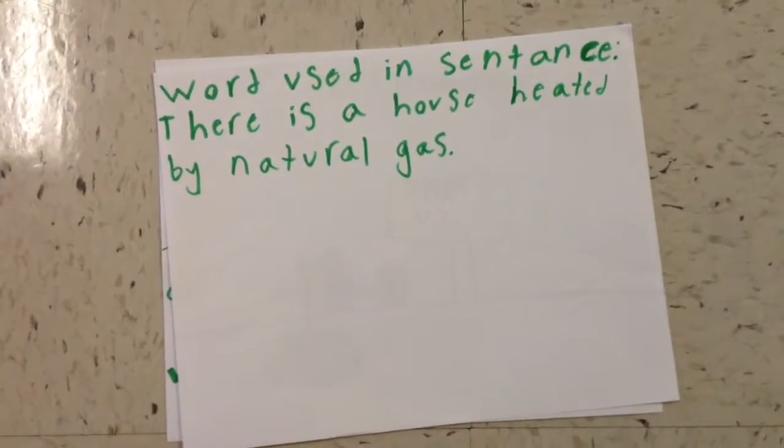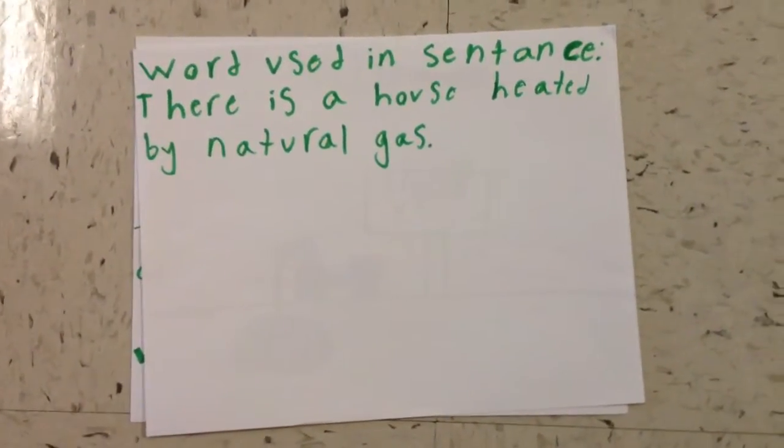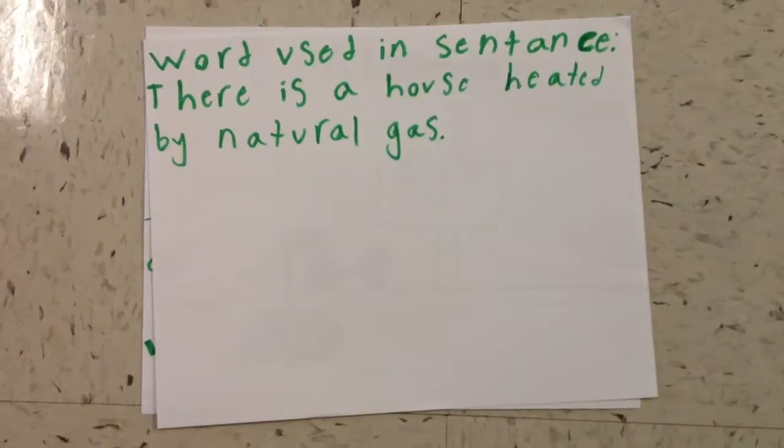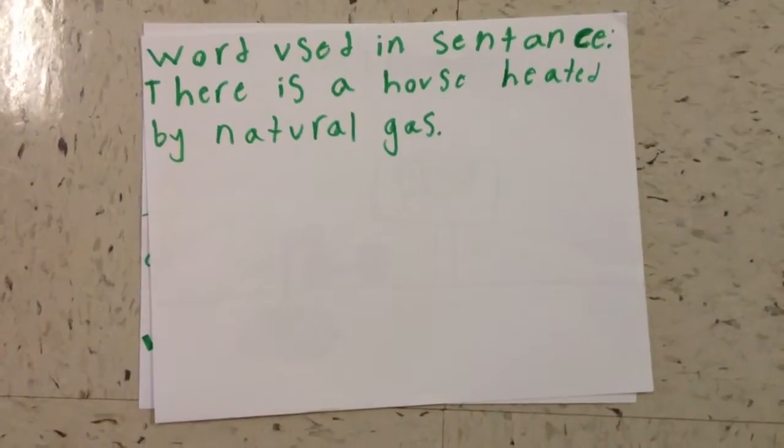Here is an example of a word used in a sentence: There is a house heated by natural gas.